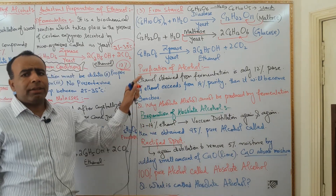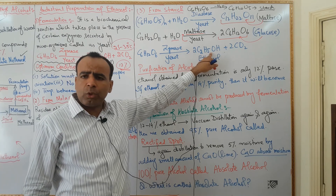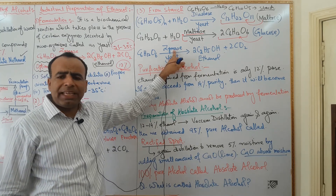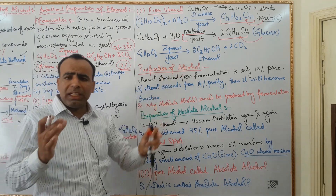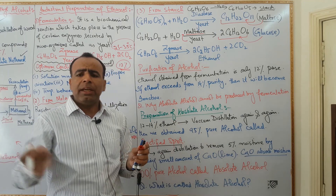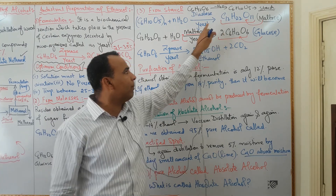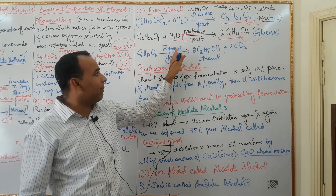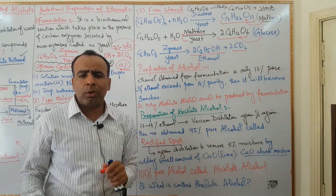In the third reaction, this glucose is converted into ethanol in the presence of zymase enzyme, which is also obtained from yeast. The yeast with fungus attached — as in the fermentation story described earlier — secretes zymase enzyme. In the presence of zymase enzyme, glucose is converted into ethanol, and carbon dioxide is produced as a by-product.